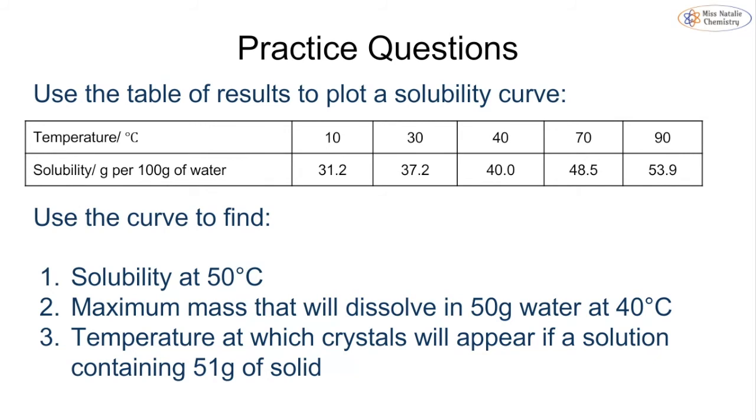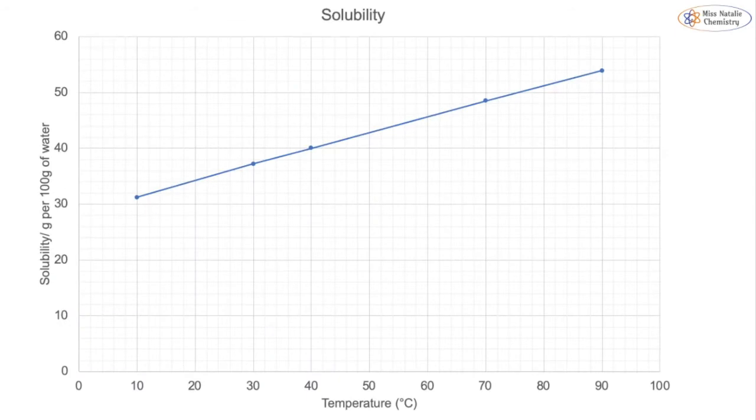Remember your graph must always have regular scales. At each of these temperatures we have a solubility, and we can use our graph or our curve to tell us a number of different things. This is an example of my solubility graph - I've got my temperature along the x-axis, my solubility along the y-axis, and I've got my points plotted.